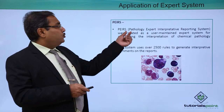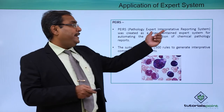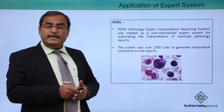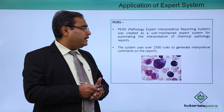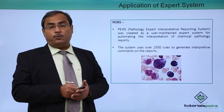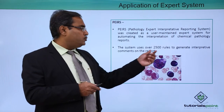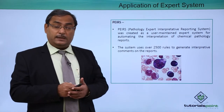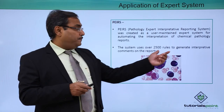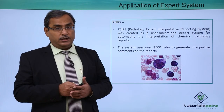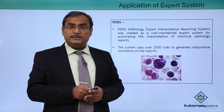PEIRS — the Pathology Expert Interpretive Reporting System — was created as a user-maintained expert system for automating the interpretation of chemical pathology reports. It generates chemical pathology reports through the expert system. The system uses over 2500 rules to generate interpretive comments on the reports. In this way, expert systems can play a very vital and productive role in medical diagnostics and pathological tests.